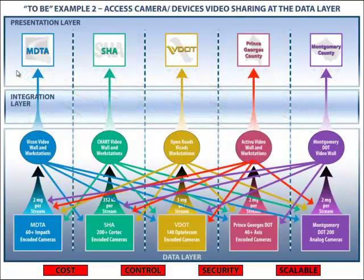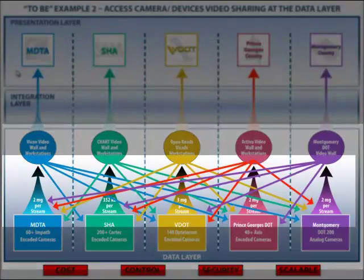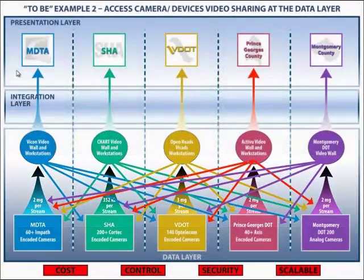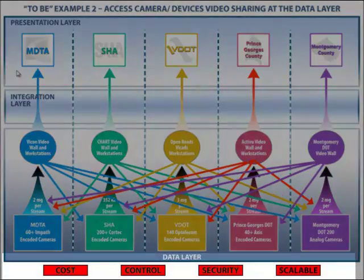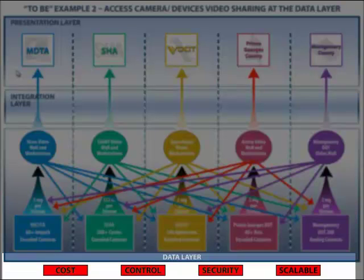The next slide, example two, shows sharing at the data layer. In this fashion, you allow agencies to access your video, cameras, and system at the data layer. It has many of the same problems as the presentation layer — you have to have network connectivity across all these different agencies, and you have to allow them access to your application, which lets them pull the camera they want to see. As you can see, this has issues associated with cost, control, security, and scalability. It results in high network costs, a loss of control, security issues from allowing people into your network and application, and the same kind of scalability issues seen in the previous slide.